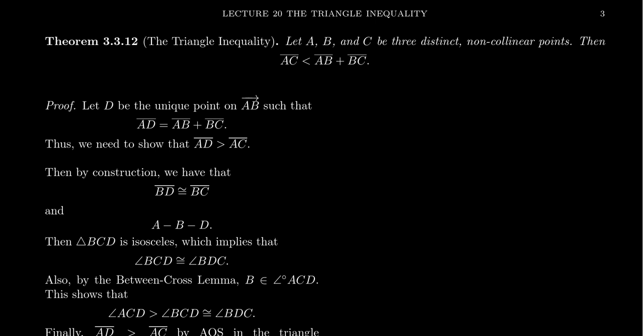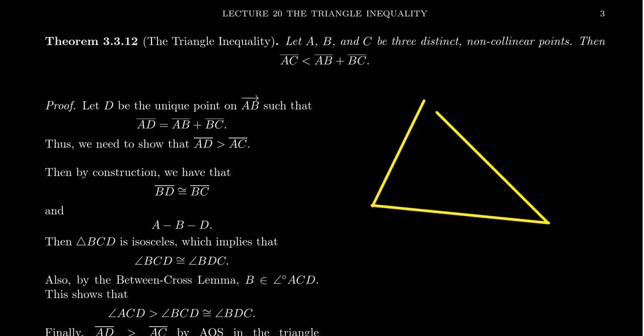Why does it get the name triangle inequality? Well, inequality makes sense because it is an actual inequality with regard to segments. It's called the triangle inequality because we think of these three distinct non-collinear points as vertices of a triangle.